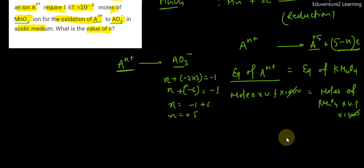Now moles into valency factor: if An+ moles is 2.68 into 10 to the power minus 3, and valency factor is 5 minus N.